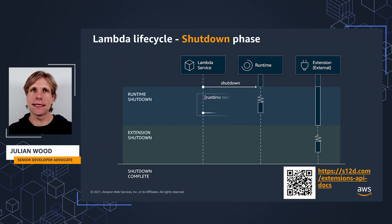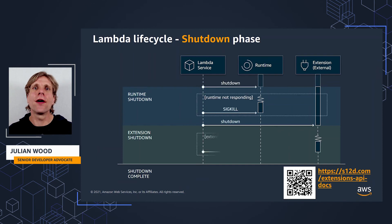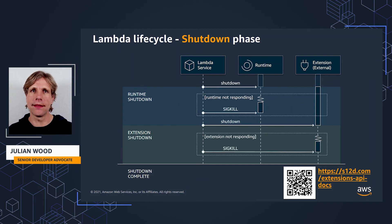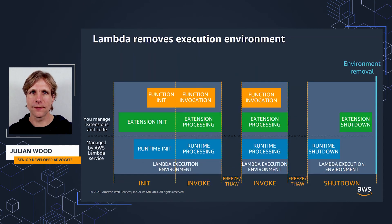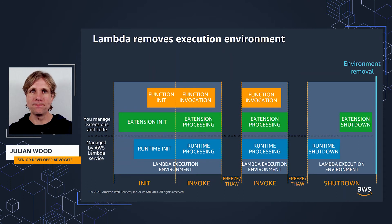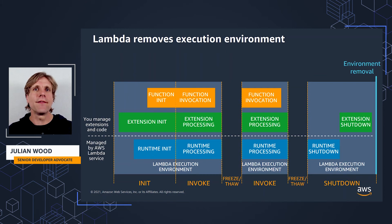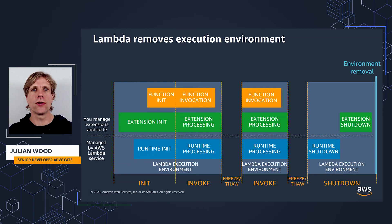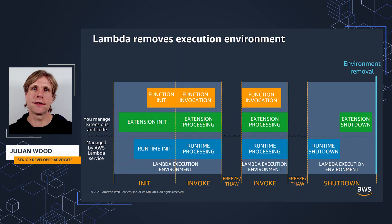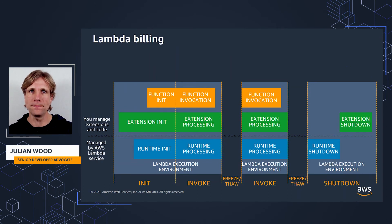Extensions can use this time for any final cleanup tasks they need to do. This could be to send out any remaining logs or telemetry data, notify some other system, or close connections. You can see the shutdown phase flow diagram in the documentation. Lambda then goes ahead and removes the whole execution environment, cleaning up everything to do with this sequence of function invocations. If any further invocations come in that are not routed to other execution environments, the whole cycle starts again with the init phase.